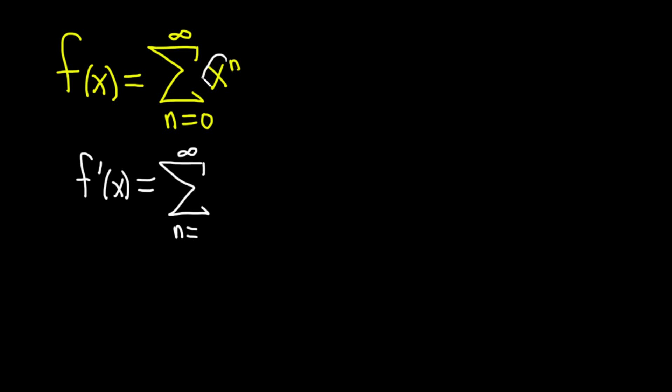So you want to look at x to the n and you want to say, hey, I can use the power rule. So I'm going to bring down the n. And then we have x. And then you subtract 1 from the exponent. So you get n minus 1.